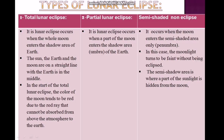At the start of the total Lunar Eclipse, the color of the Moon tends to be red, due to the red rays that cannot be absorbed from above the atmosphere to the Earth.